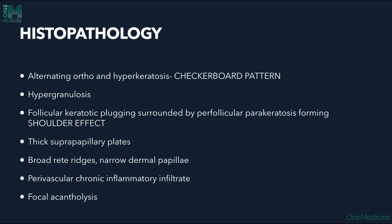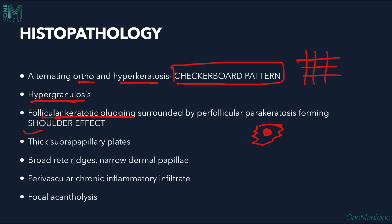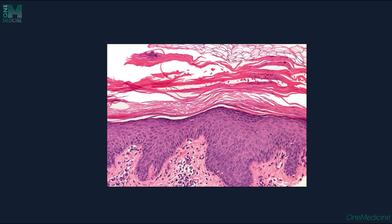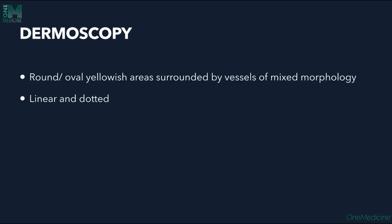Histopathology of PRP shows a checkerboard pattern, which is alternating orthokeratosis and parakeratosis. There is hypergranulosis, keratin plugging inside the follicles surrounded by parakeratosis giving a shoulder effect, thin suprapapillary plates, broad rete ridges, narrow dermal papillae, perivascular infiltrate in the dermis, and focal acantholysis may sometimes be present. The key features are the checkerboard pattern and the shouldering effect.